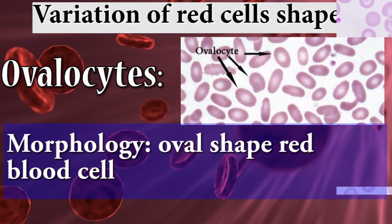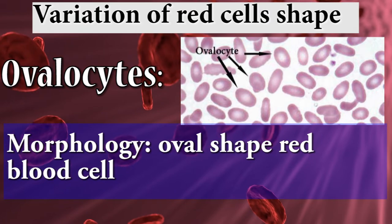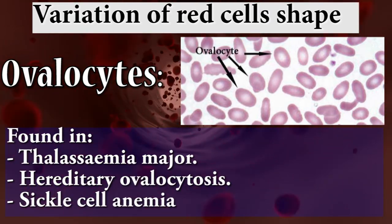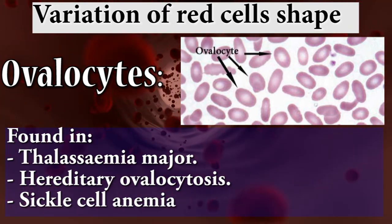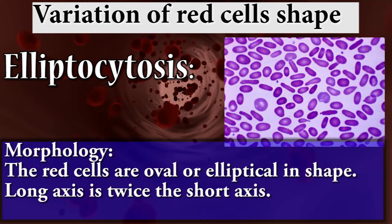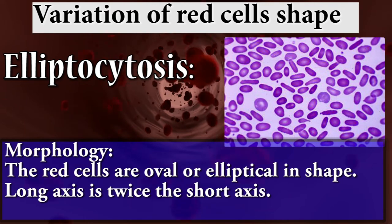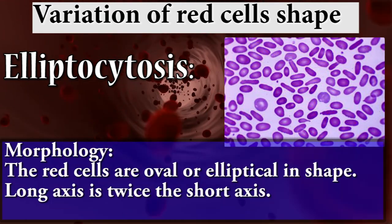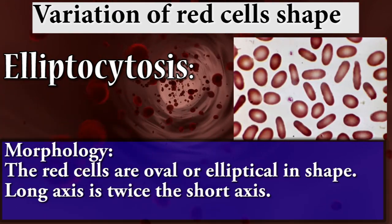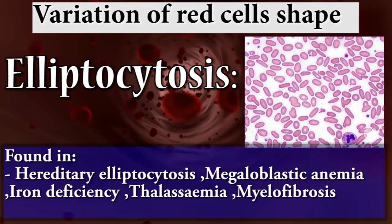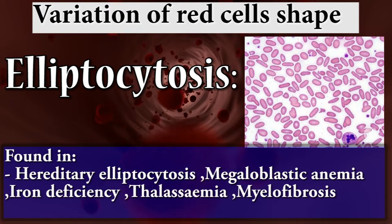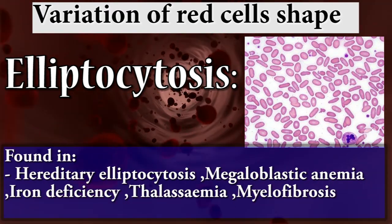The third shape variation is ovalocytes: oval-shaped red blood cells found in thalassemia major, hereditary ovalocytosis, and sickle cell anemia. The fourth is elliptocytosis: red cells are oval or elliptical in shape, with the long axis twice the short axis. Found in hereditary elliptocytosis, megaloblastic anemia, iron deficiency, thalassemia, and myelofibrosis.